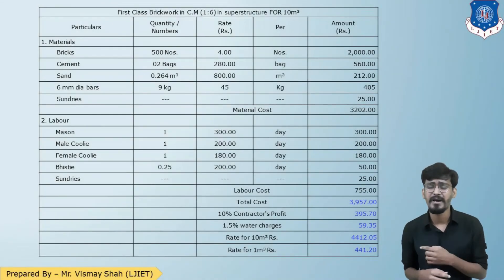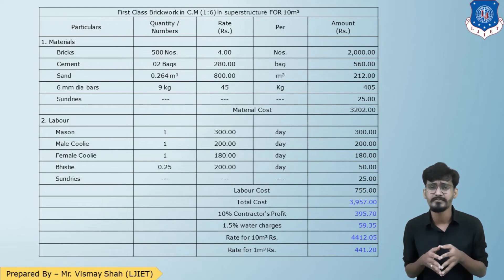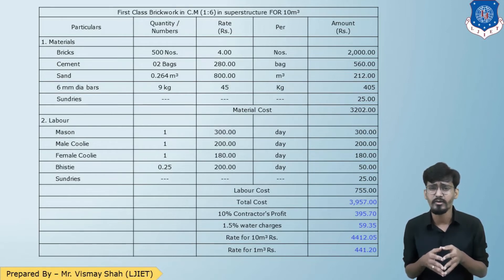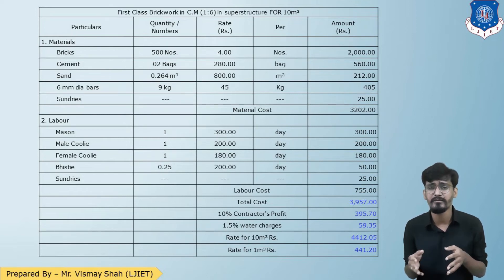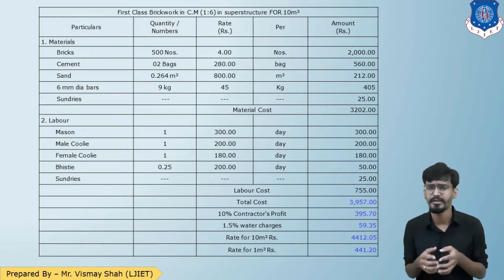In the final table for partition brickwork: material cost was Rs. 3,202 and labor charges Rs. 755, giving a total cost of Rs. 3,957. Adding 1.5% water charges and 10% contractor's profit, the grand total is Rs. 4,412 for 10 meter square. Dividing by 10, the final cost is Rs. 441.20 per meter square, which can be rounded to Rs. 450 per meter square. Note that outer walls are generally measured in cubic meter.